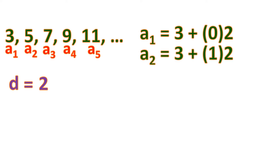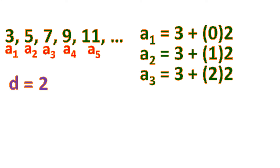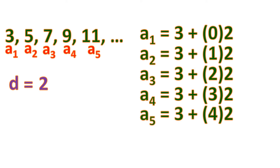For the second term, we add 1 common difference to the first term: 3 plus 1 times 2 equals 5. For the third term, it is 3 plus 2 times the common difference, giving 7. The fourth term is 3 plus 3 times the common difference, giving 9. And the fifth term is 3 plus 4 times the common difference, which is 11.